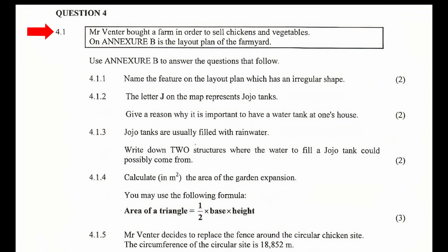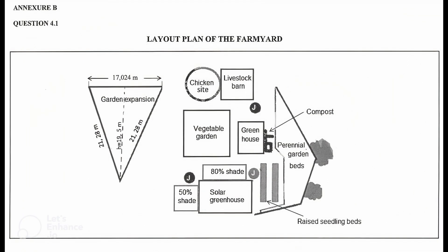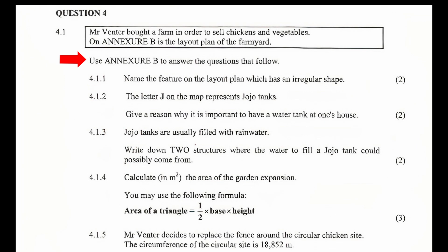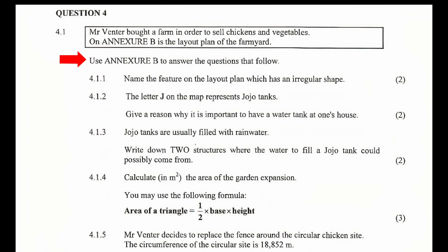Question 4.1. Mr. Fenter bought a farm in order to sell chickens and vegetables. On Annexure B is a layout plan of the farmyard. The shapes on the layout plan consist of circles, squares, rectangles, and a triangle. We also see two shapes that can be classified as irregular. The triangular shape garden expansion is the only shape that has dimensions. We are instructed to use Annexure B to answer the questions that follow.